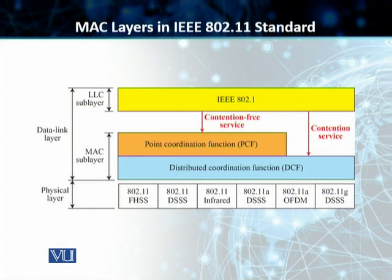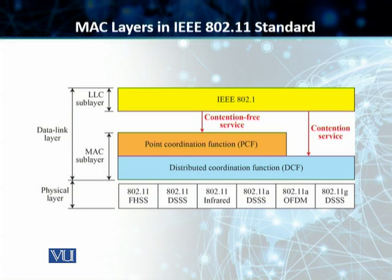As you can see on the slide, we have the Distributed Coordination Function or the DCF. In this particular case, the DCF is a contention service, which essentially means that stations using this particular MAC service need to contend or compete to take ownership of the medium, and only then can they transmit. The second MAC sublayer is called the Point Coordination Function or PCF, and that is a contention-free service used for stations which have a higher priority to transmit as compared to the DCF.